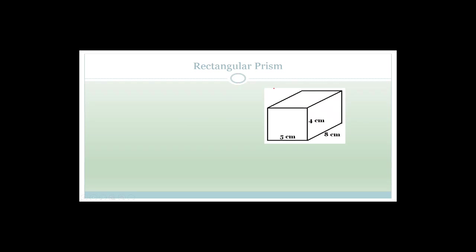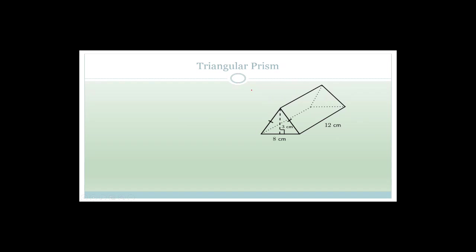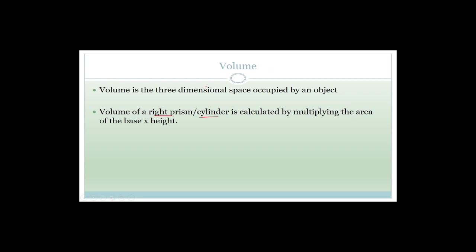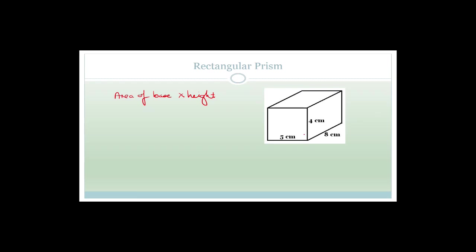For example, if we've got a rectangular prism, we need the area of the base multiplied by the height. This is called a right prism because these angles are 90 degrees. So the volume is the area of the base times the height. The area of the base is this bit at the bottom, with a little dotted line.